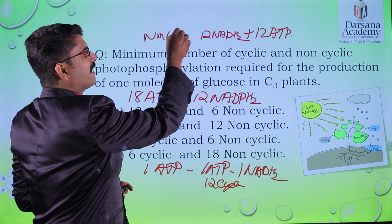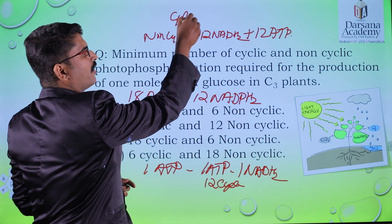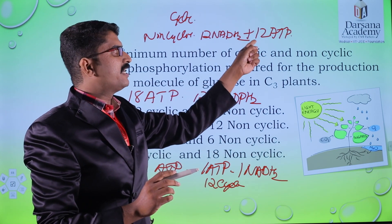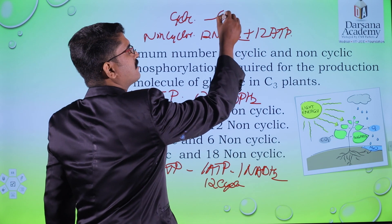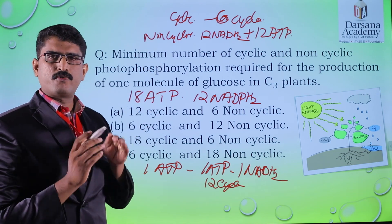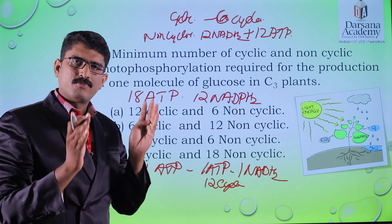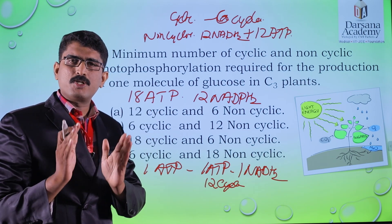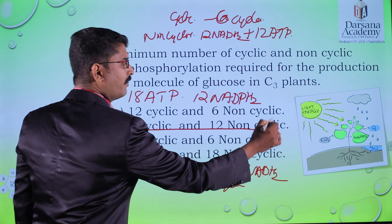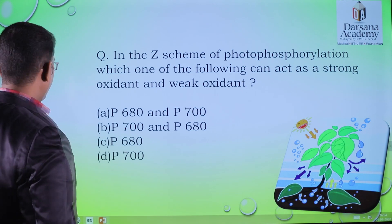So 12 NADH2 and 12 ATP come from non-cyclic. The rest of the 6 ATP can be taken from cyclic photophosphorylation. For 6 ATP we require 6 cycles — that is, 6 cyclic photophosphorylation. So 6 cyclic and 12 non-cyclic photophosphorylation will result in the formation of 12 NADH2 and 18 ATP. The answer is 6 cyclic and 12 non-cyclic.